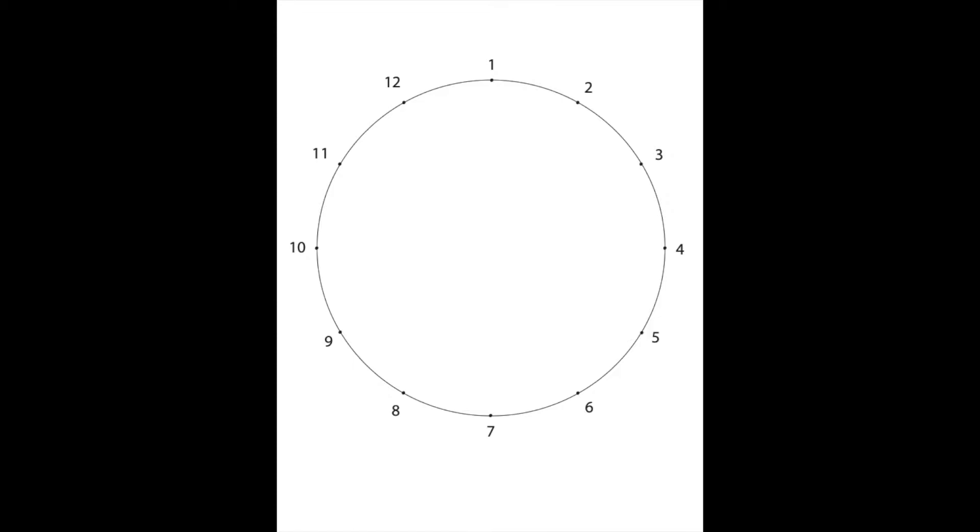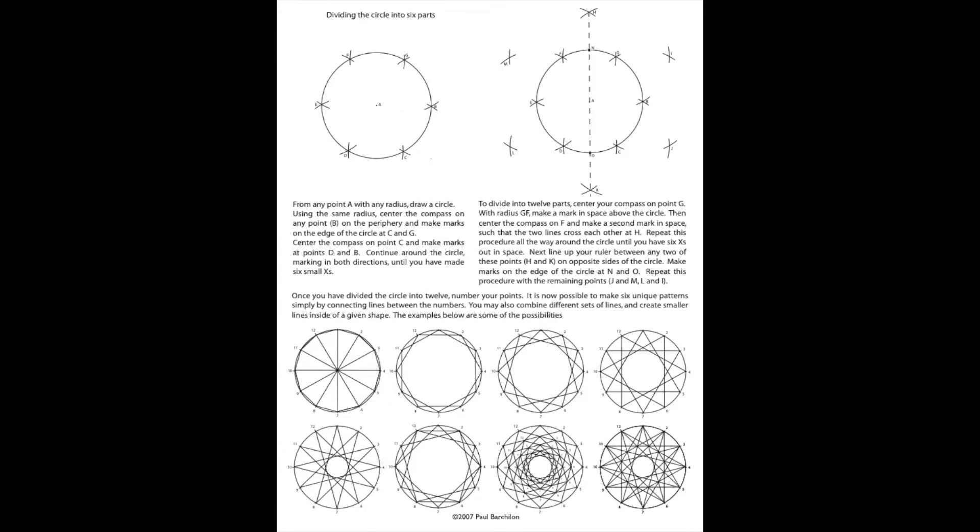So to do this first part of the workshop, you're going to need to download and print out this PDF file that we have on the website. This divides the circle into 12 for you already. Later in the lesson, I'll show you how to divide the circle into 12 yourself. But if you're younger, I recommend starting out with this one because it's a lot easier to work with. This file is also on the website, and it shows you how to divide the circle. I recommend trying this one if you're in at least 7th grade. If you're younger than that, it might be a little too difficult for you.